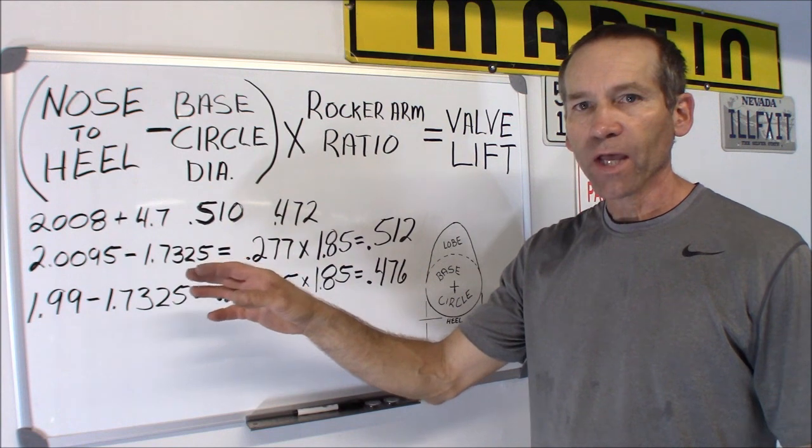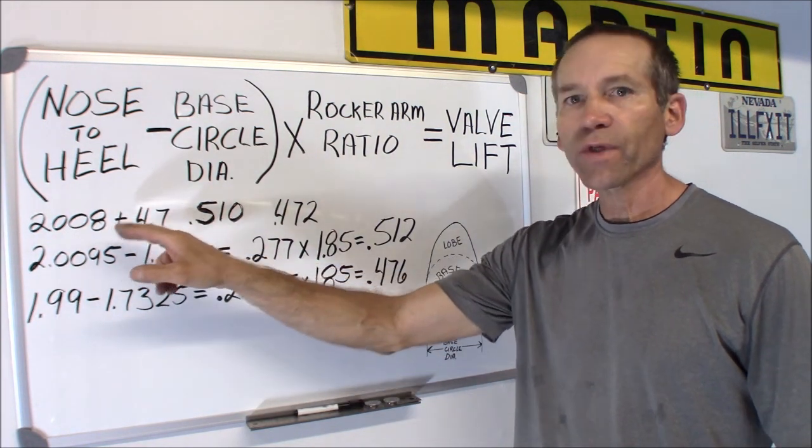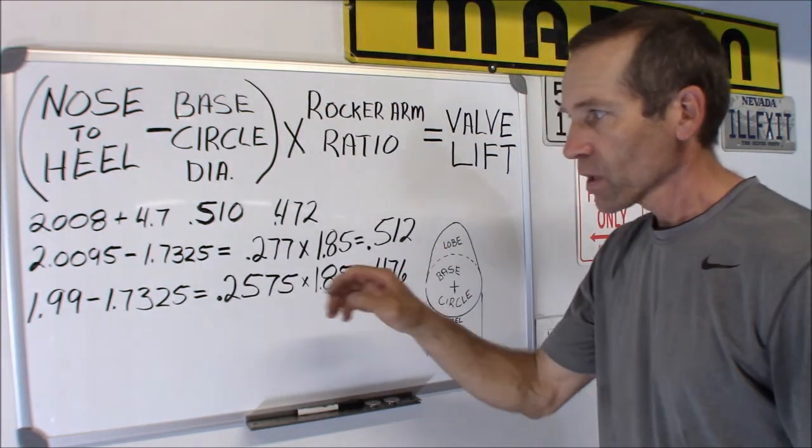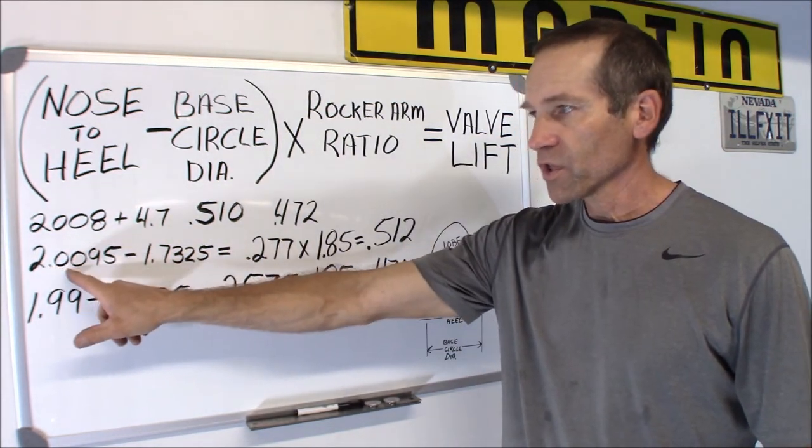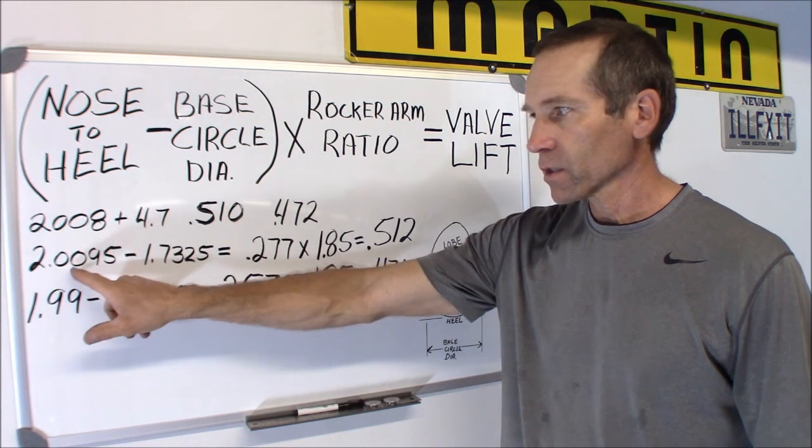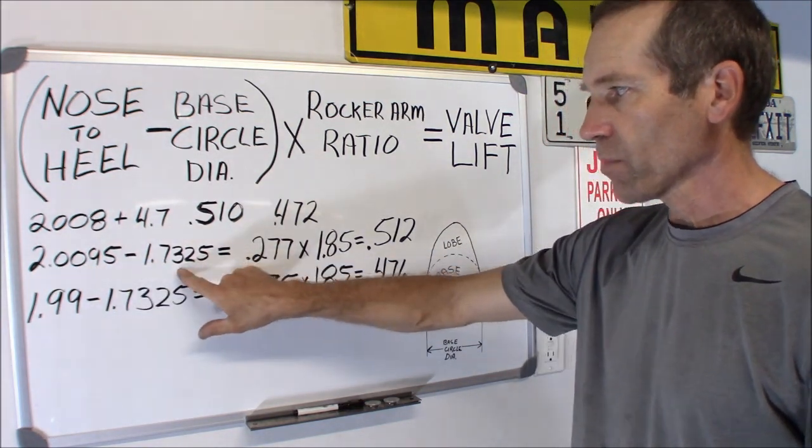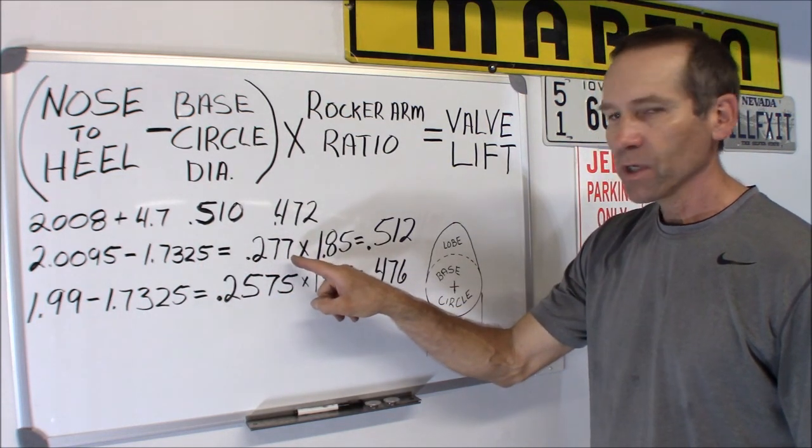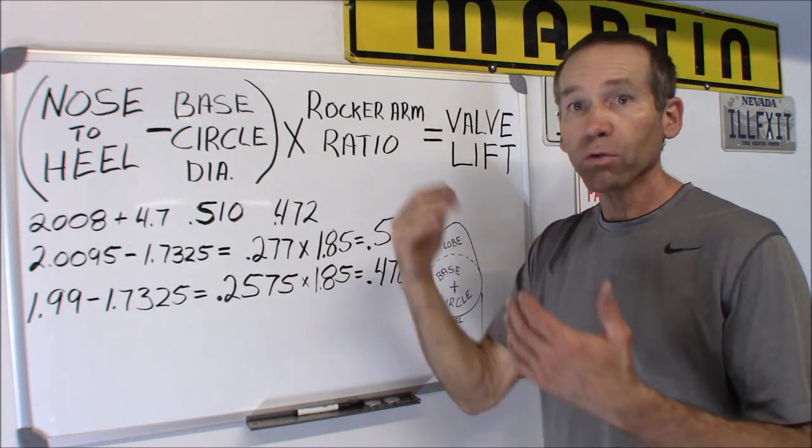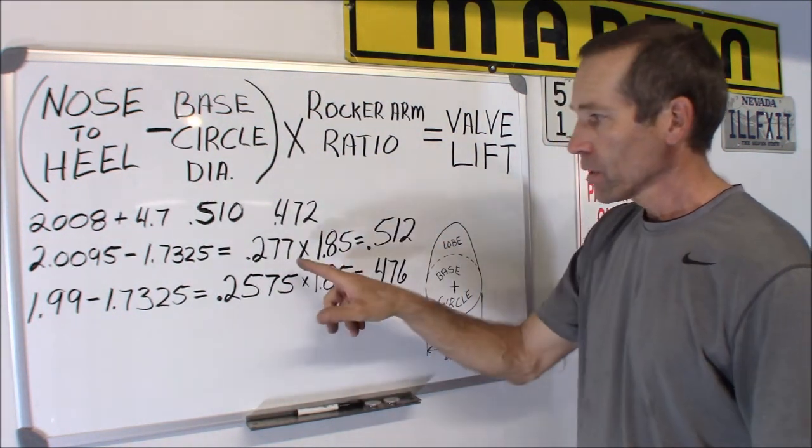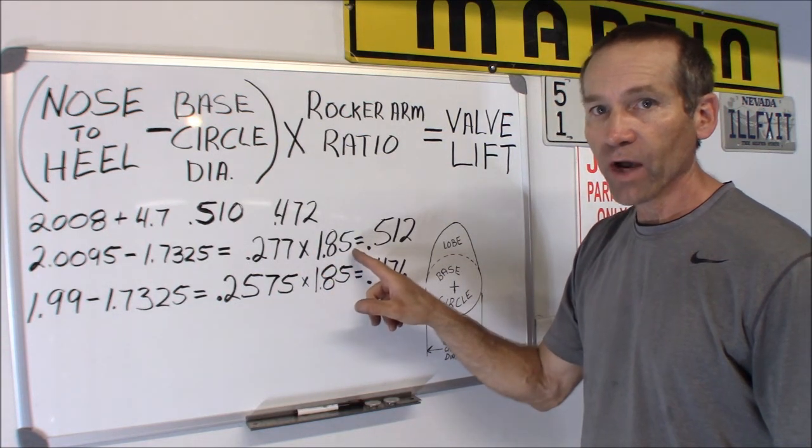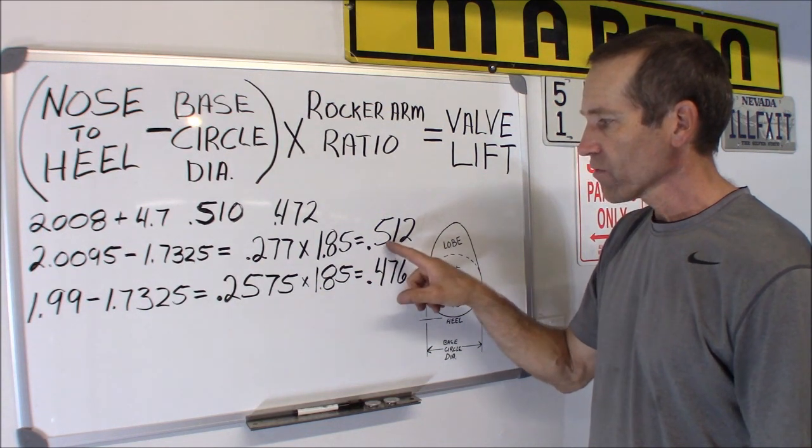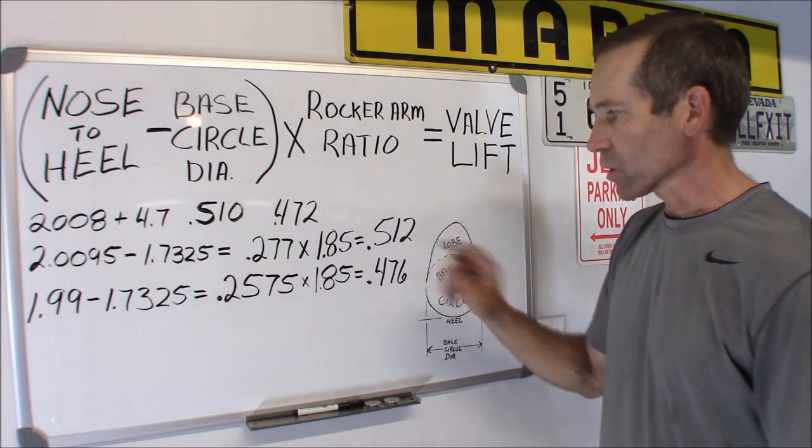Okay, so we got our measurements from our camshaft, which is the 2008 4.7 liter camshaft. This would be 2008 and above. So, this is the intake one right here. We minused the base circle. It equals 0.277. That is the actual difference between the base circle and the lobe height. Then we multiply that by the 1.85 of your rocker arm ratio. And we end up with a 0.512. So, just a little over half an inch.